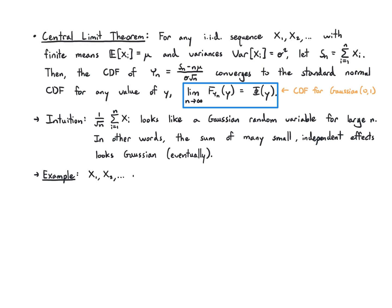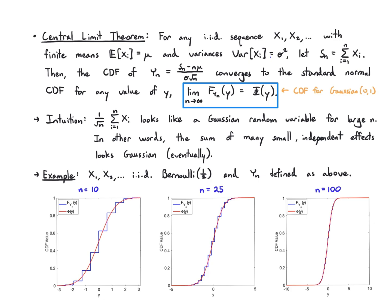Here in this example, I have X₁, X₂, and so on, which are i.i.d. Bernoulli(½), Yₙ is defined as above, and what I'm doing is plotting what happens to the CDF. So you can see that for n equals 10, I kind of have this staircase representing the CDF of this discrete random variable, which is the sum of 10 Bernoullis, and I have this red curve, which is the Gaussian CDF.